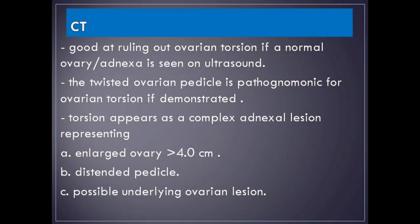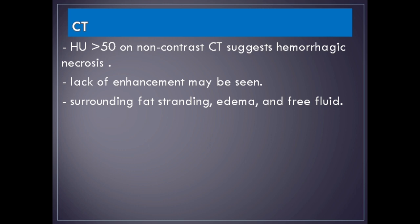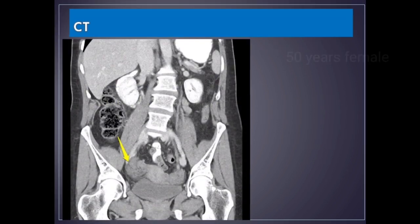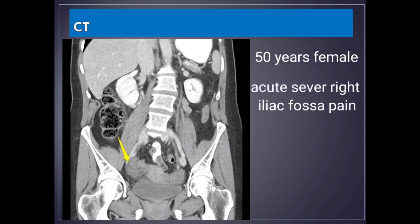CT. CT is good at ruling out ovarian torsion if a normal ovary or adnexa is seen on ultrasound. The twisted ovarian pedicle is pathognomonic for ovarian torsion if demonstrated. Torsion appears as a complex adnexal lesion with an enlarged ovary greater than 4.0 cm, distended pedicle, and possible underlying ovarian lesion. Hounsfield unit greater than 50 on non-contrast CT suggests hemorrhagic necrosis. Lack of enhancement, surrounding fat stranding, edema, and free fluid may also be seen. A case example: a 50-year-old female with acute severe right iliac fossa pain shows on coronal CT a large right adnexal cystic lesion with a solid-appearing torsed congested pedicle anteriorly, demonstrating a whirl pattern.